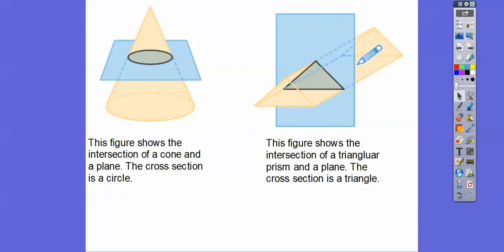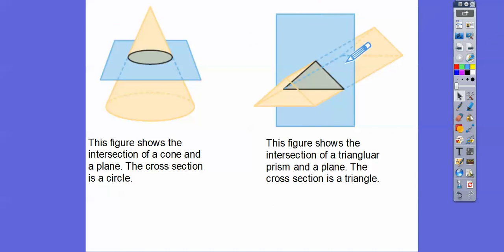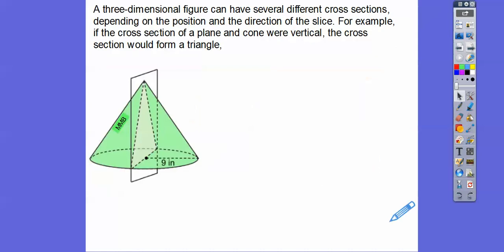Here's a prism being sliced by this blue plane. They typically draw planes as looking like a parallelogram or a rectangle. The plane goes on forever in all directions, but where it slices this triangular prism, it makes this gray triangle. So the cross-section is that gray triangle.